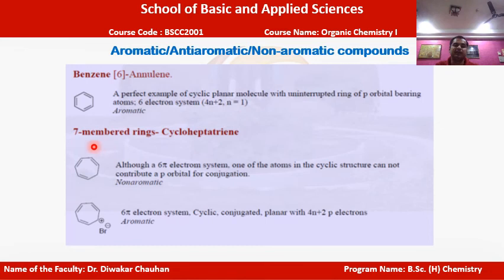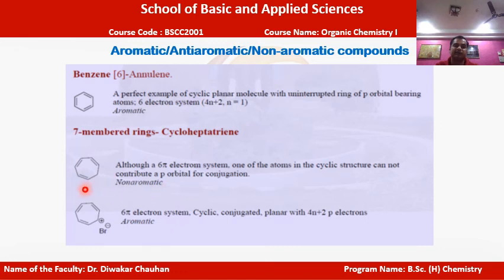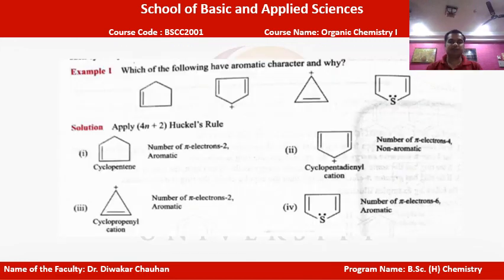Cycloheptatriene cation has six pi electrons and, due to the positive charge at the corner, the pi electrons can delocalize continuously over the ring. Since it is cyclic, conjugated, planar, and follows the 4n+2 rule, cycloheptatriene cation is aromatic.